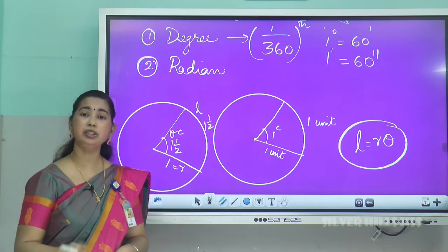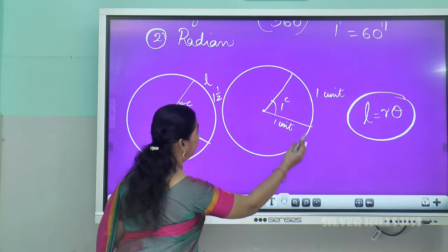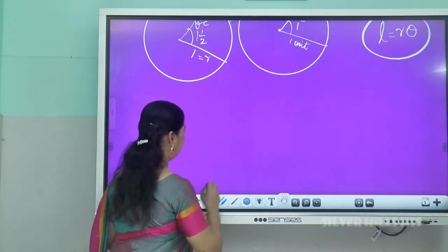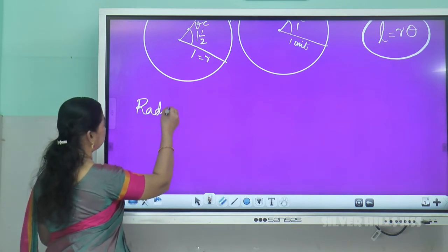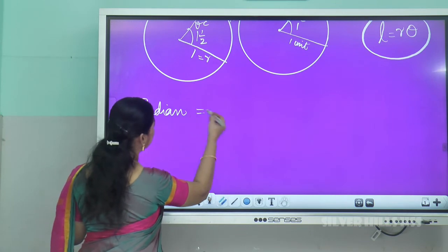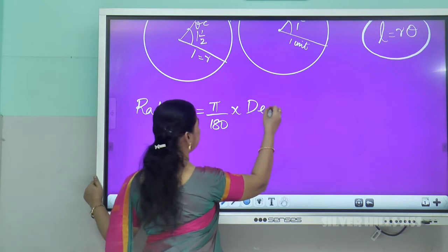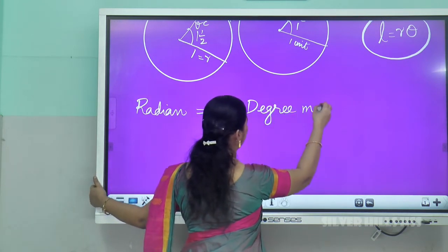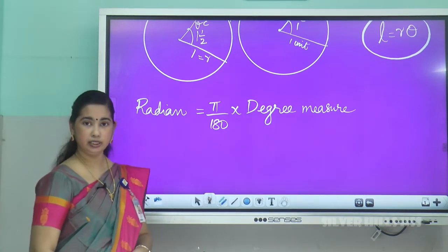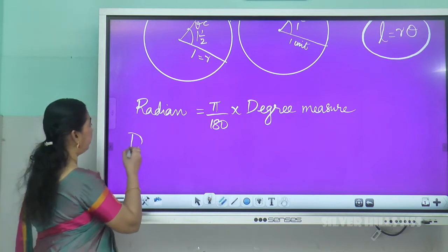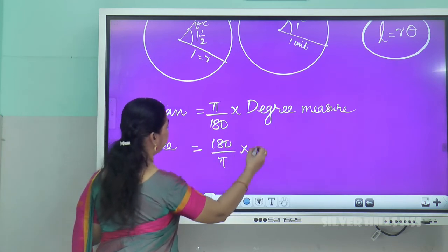Now, what is the way of converting degree measure to radian measure and vice versa? To convert degree measure to radian measure: radian measure = (π/180) × degree measure. And degree measure = (180/π) × radian measure.